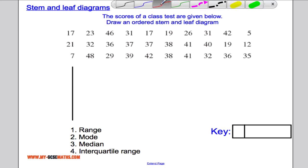Now the very first thing we must do is decide on a key, and that just explains how we read our stem and leaf diagram. So if I choose, for example, 21 and I say 2 with this line here, 1 means 21. That just tells whoever views the stem and leaf diagram exactly what it means.